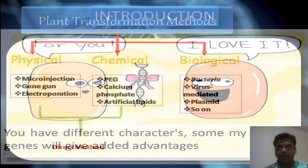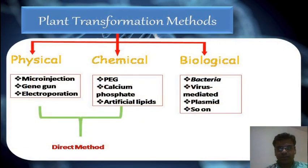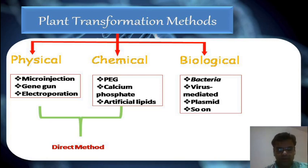There are three methods of gene transfer: physical method, chemical method, and biological method. Physical and chemical methods are also called direct methods or artificial methods of gene transfer. They include methodologies like microinjection, gene gun, electroporation, calcium phosphate, PEG, artificial lipids, etc.